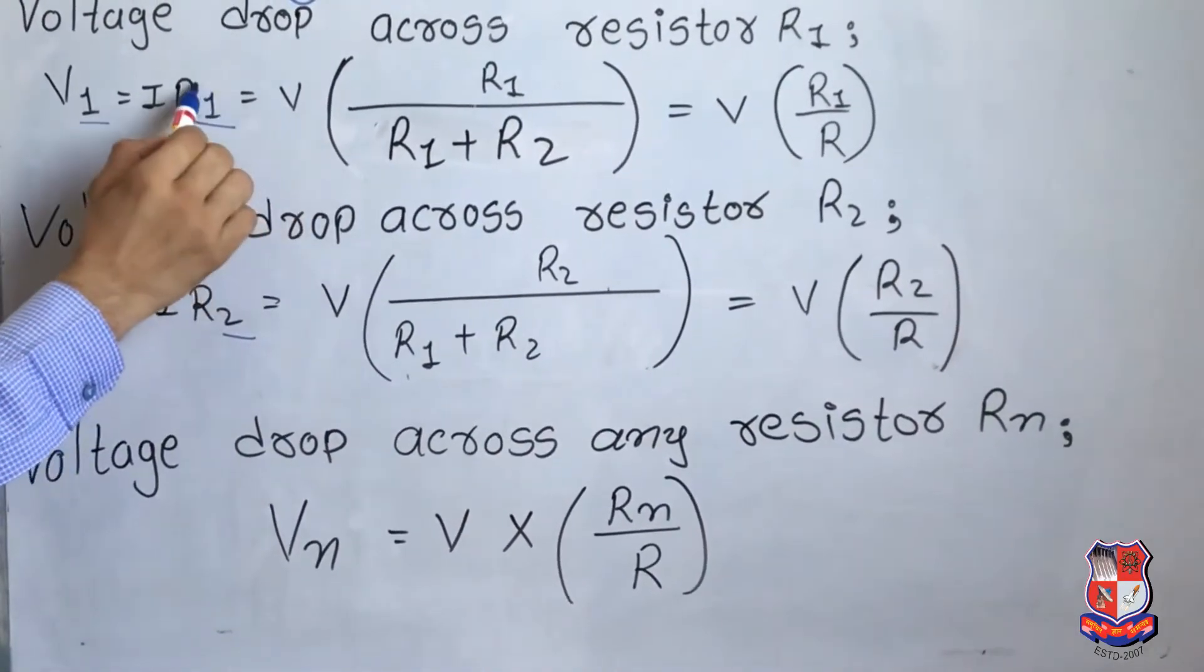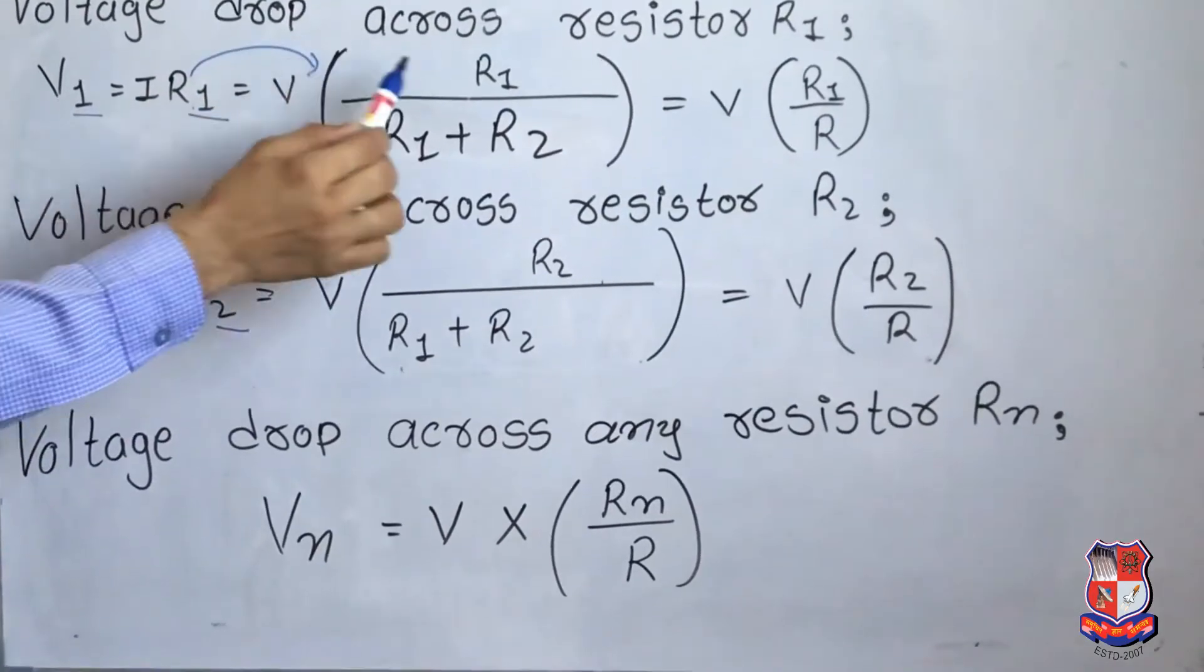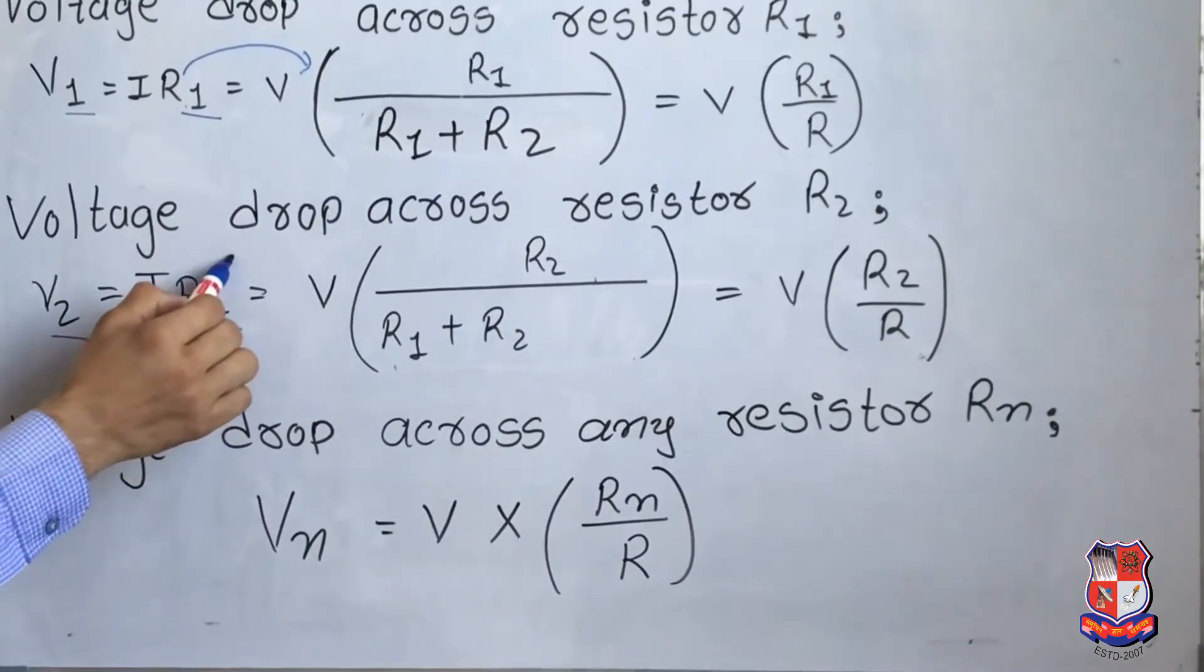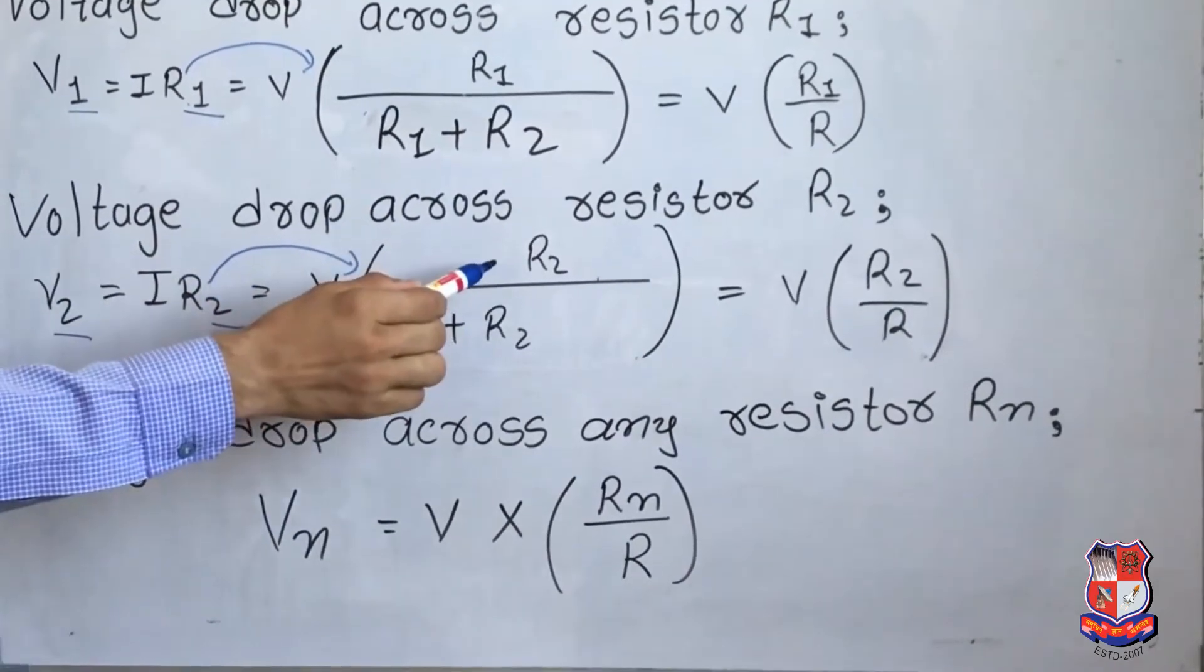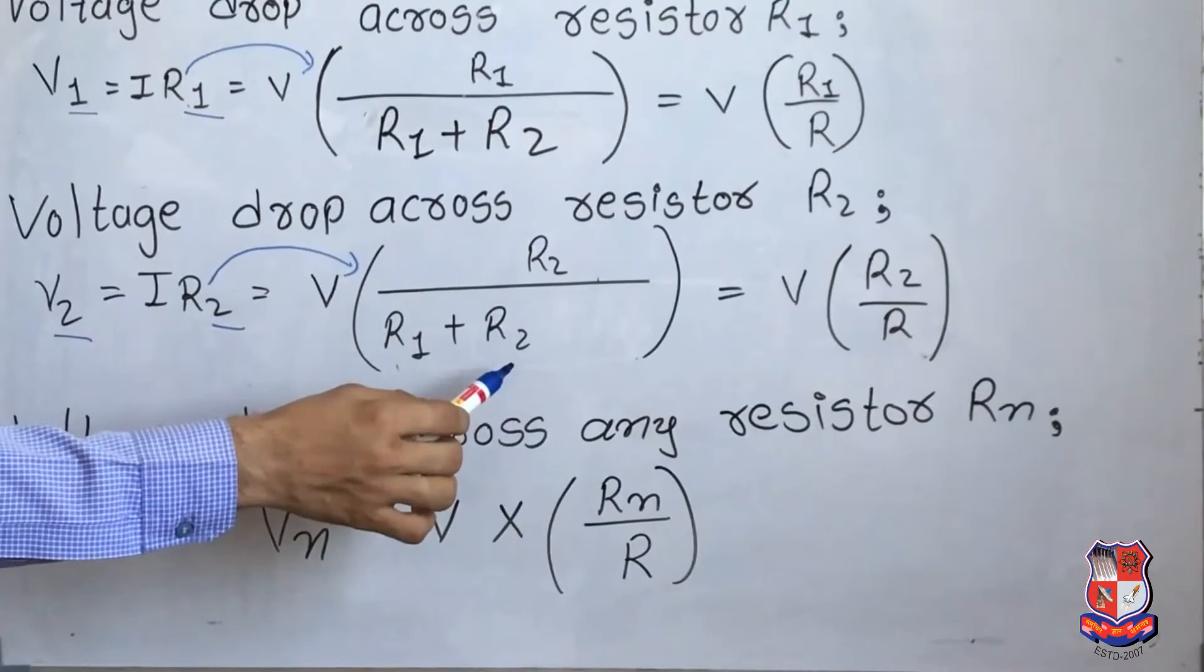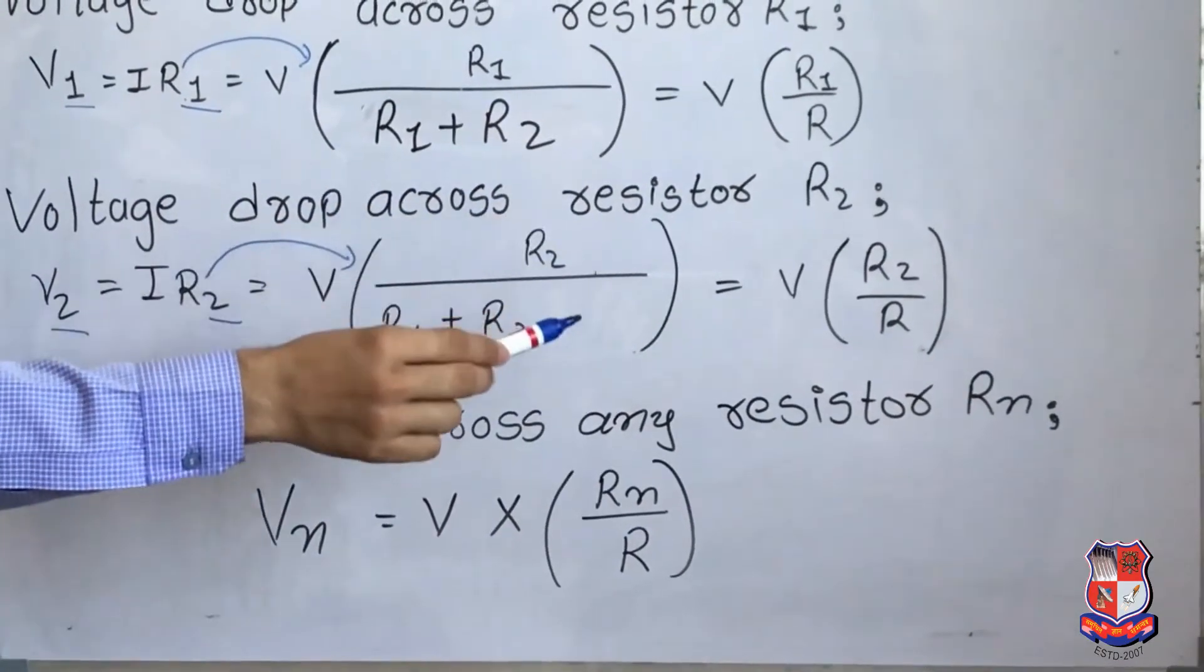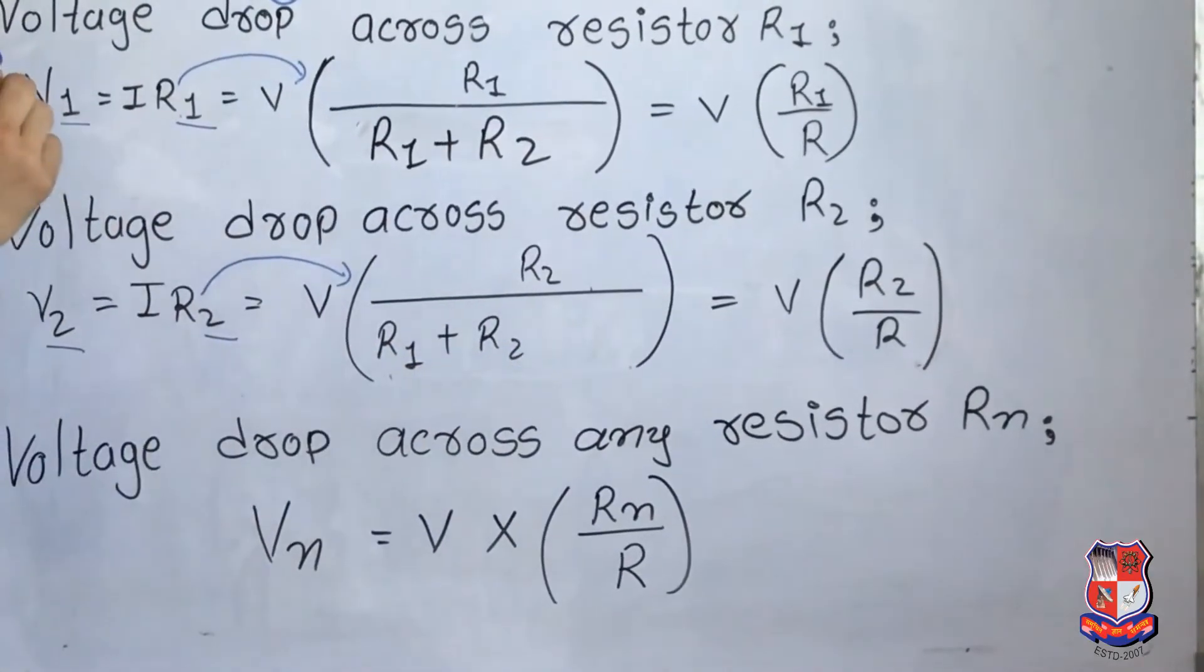So R1 divided by R1 plus R2. Same here for R2, so R2 will come on top. R2 divided by R1 plus R2. So you get V R1 divided by R and V R2 divided by R. This way you got voltage drop.